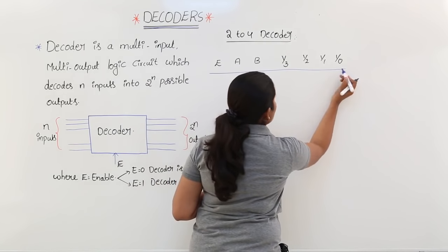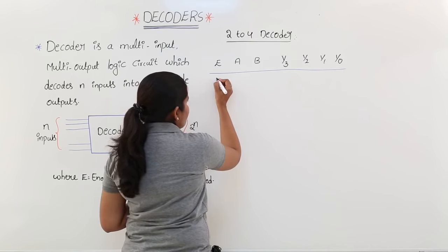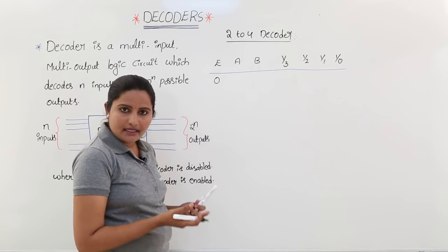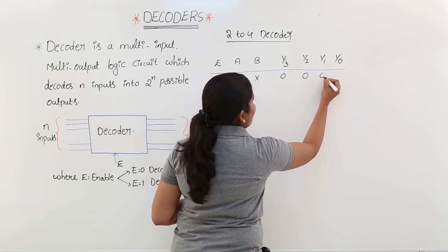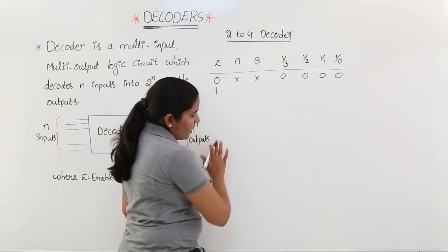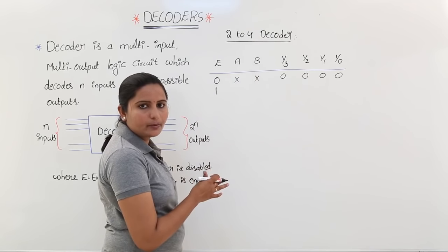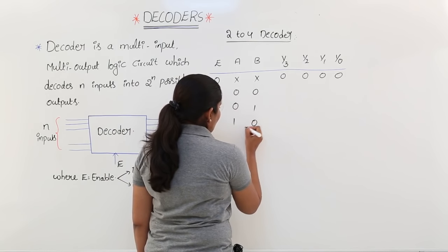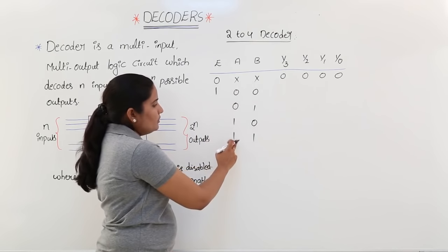This is the truth table for the 2-to-4 decoder. When enable is equal to 0, without knowing A and B — that is, regardless of inputs — the output of the decoder is equal to 0. When enable is equal to 1, you need to check the combinations of inputs: 00, 01, 10, 11, giving 4 combinations from 0 to 3.